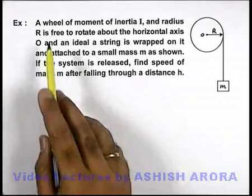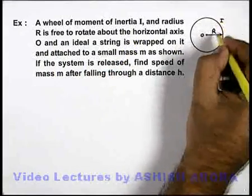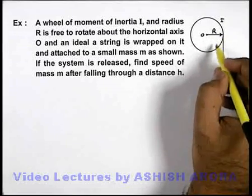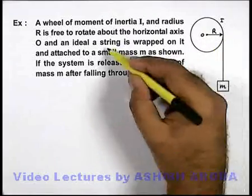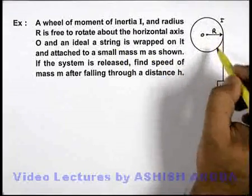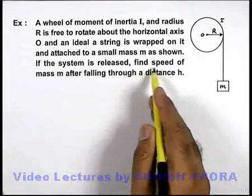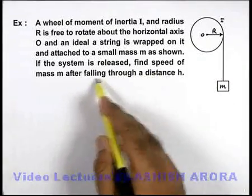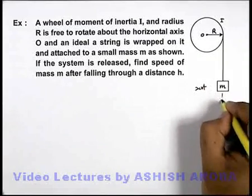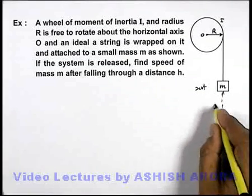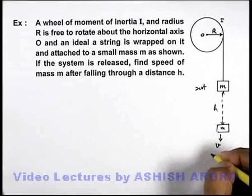In this problem we are given a wheel of moment of inertia I and a radius r, which is free to rotate about the horizontal axis passing through its center O. An ideal string is wrapped on it and attached to a small mass m. If the system is released, we are required to find the speed of mass m after falling through a distance h. Initially it was released from rest, and when it falls by a distance h, we need to find the speed — say the speed is v.